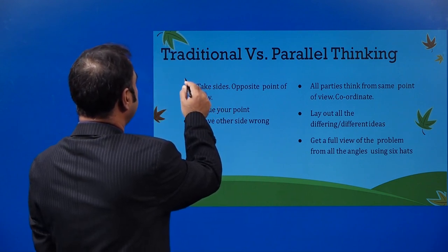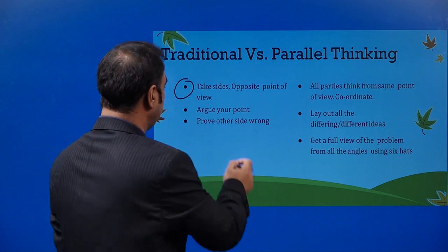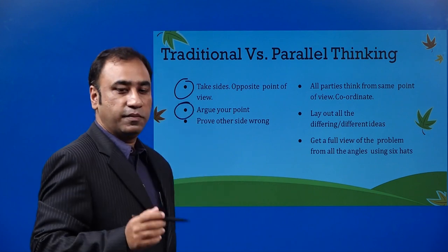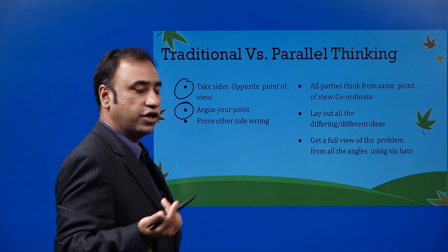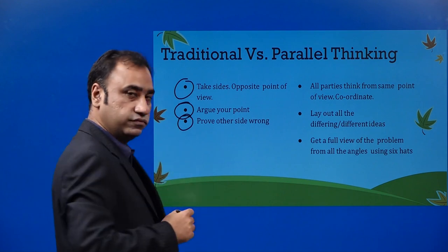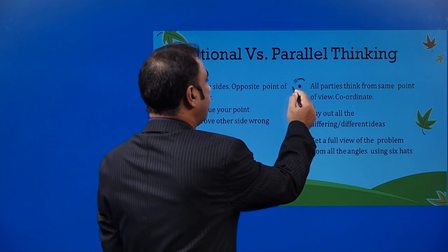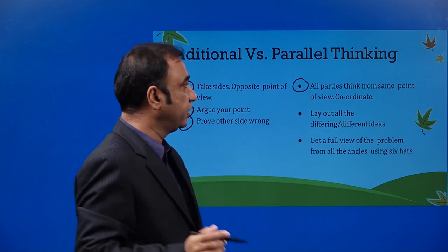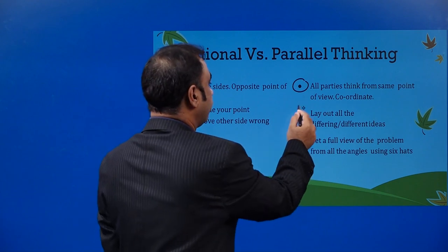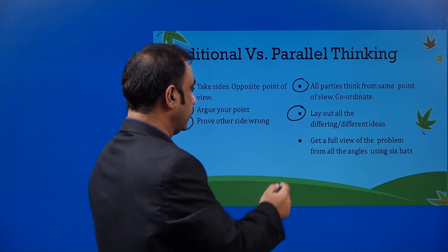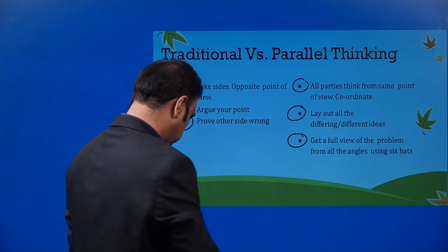Traditional versus parallel thinking. Traditional thinking says: take sides, take an opposite point of view, argue your point. My point is right — no matter if we feel it is right or wrong, we continue to argue. The objective is to prove the other side as wrong. In six thinking hats — parallel thinking — all parties think from the same point of view. We lay out all differing ideas and get a full view of the problem from all angles using six hats.